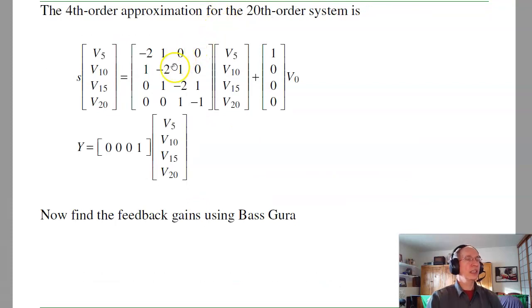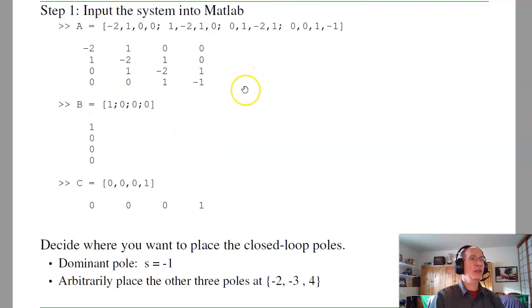The linear model then will be the same linear model we had before. A 4th order system with minus 2 on the diagonals, 1 on the off diagonals, except that last term is minus 1. B matrix is 1, 0, 0, 0, and there's your C matrix. So now that I have the dynamics, let's use Bhaskora to place the feedback gains.